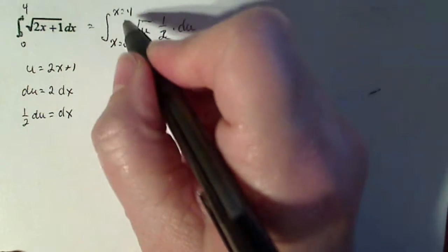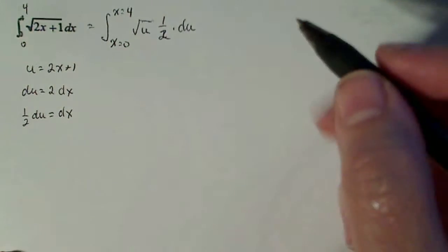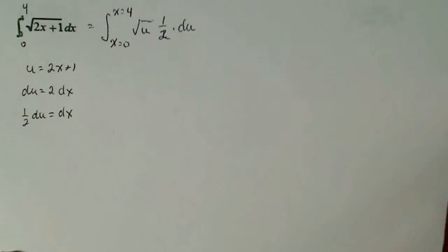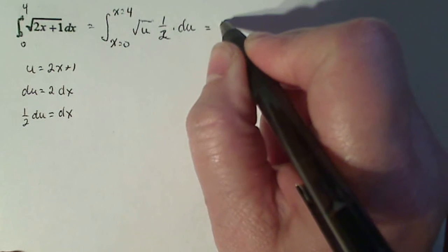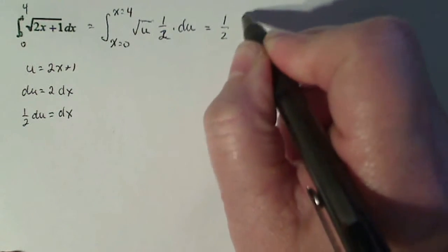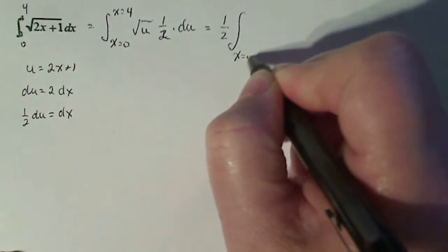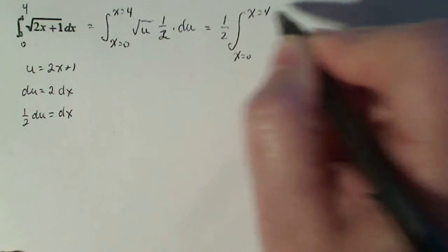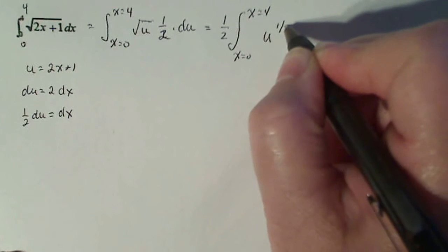Now my substitution is done. Now I can change my limits if I want, but most students don't like that, so I'm not gonna. So I do need to write them with the x values to remind me this is one half the integral from x equals 0 to x equals 4 of u to the one half du.